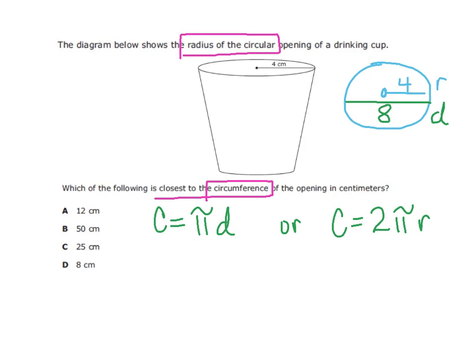When I put my numbers in, 3.14 times 8. I already know the answer is going to be much greater than 8, so I'm going to cross off 8 as an answer choice. I also know that 12 is too small. If I just estimate and say what's 3 times 8, that's going to be 24, and I'm going to get an answer close to 24. So 25 is going to be the best answer choice for the closest circumference of this cup.